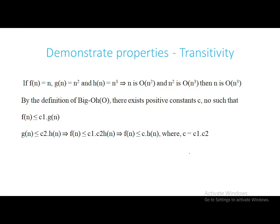To demonstrate the transitivity property, we will see an example. It is given that f(n) = n, g(n) = n², and h(n) = n³. It is stated that f(n) is in order of g(n) and g(n) is in order of h(n), and we want to prove that f(n) is in order of h(n).